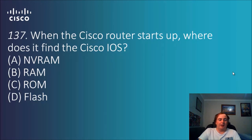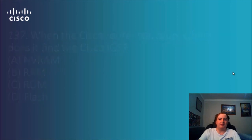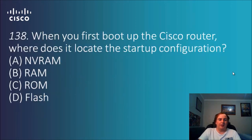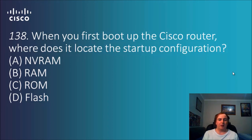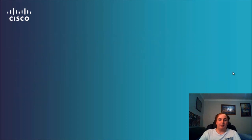Question 137: When the Cisco router starts up, where does it find the Cisco IOS? Again, just one to know and remember. The answer is flash — that's simply where it is stored. Question 138: When you first boot up the Cisco router, where does it locate the startup configuration? Options: NVRAM, RAM, ROM, flash. It's probably not RAM because configuration would be lost on restart, and it can be saved or modified. The answer is NVRAM.